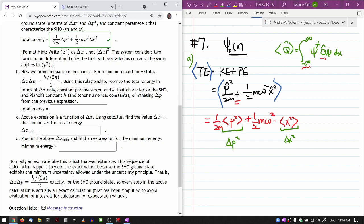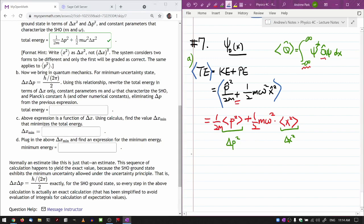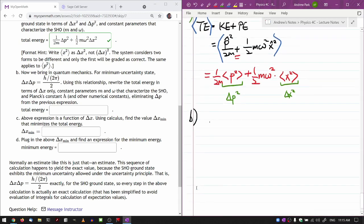So, okay, let's see here. Instruction here is rewrite the total energy in terms of delta x only, constant parameters and omega. Okay, so what I have is, so in B, what I have is, okay, delta x, delta, well, sorry, let me first copy down the result from A above, which is that my total energy can be expressed in terms of these uncertainties. So one half m, delta p squared, plus one half m, omega squared, delta x squared.